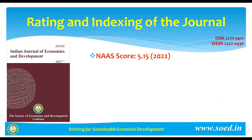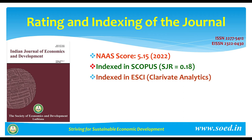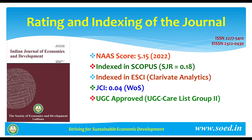The journal has a NAAS score of 5.15, is indexed in Scopus with an SJCR of 0.18 for 2021, indexed in Emerging Sources Citation Index by Clarivate Analytics (Web of Science) with a GCI of 0.04, UGC approved and listed under UGC Care List Group 2. All journals indexed in Scopus are listed under UGC Care List Group 2, and it is also indexed in CABI and a large number of other indexing sources.